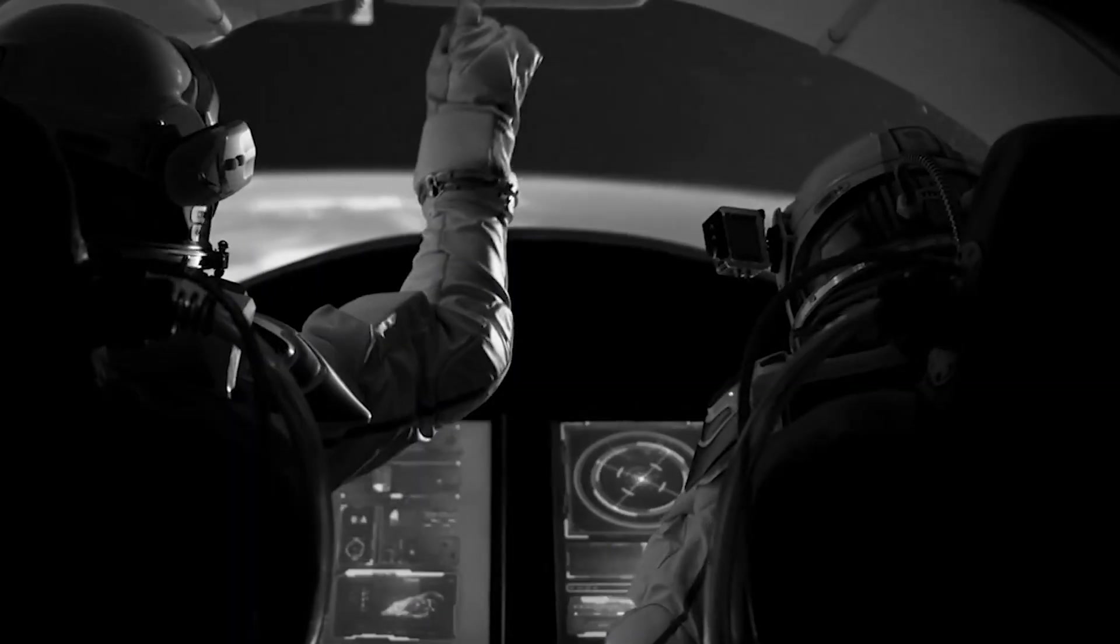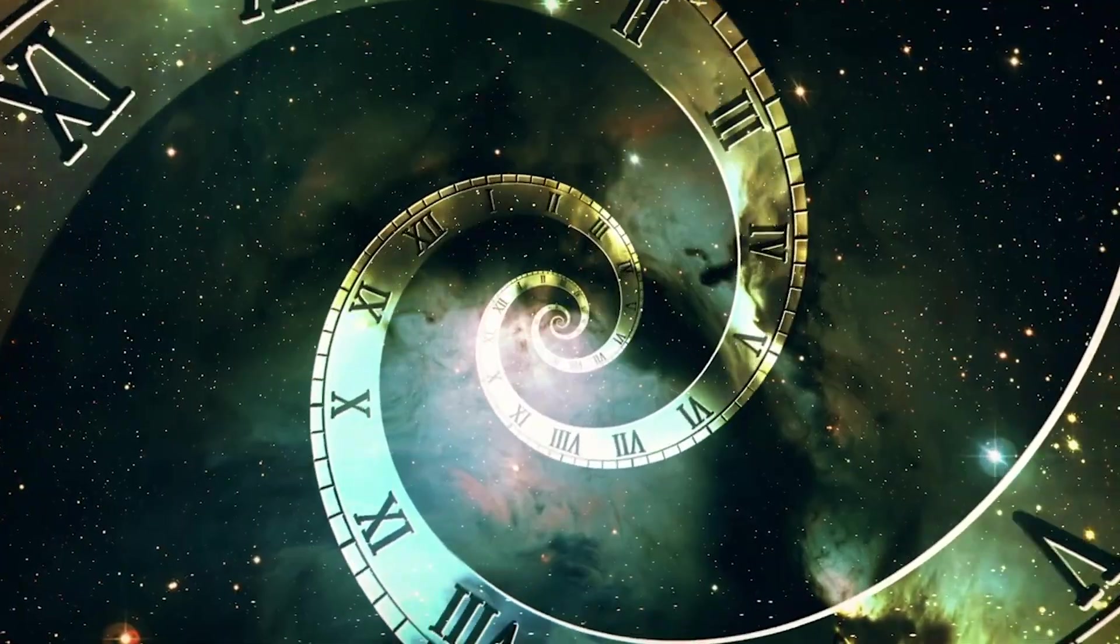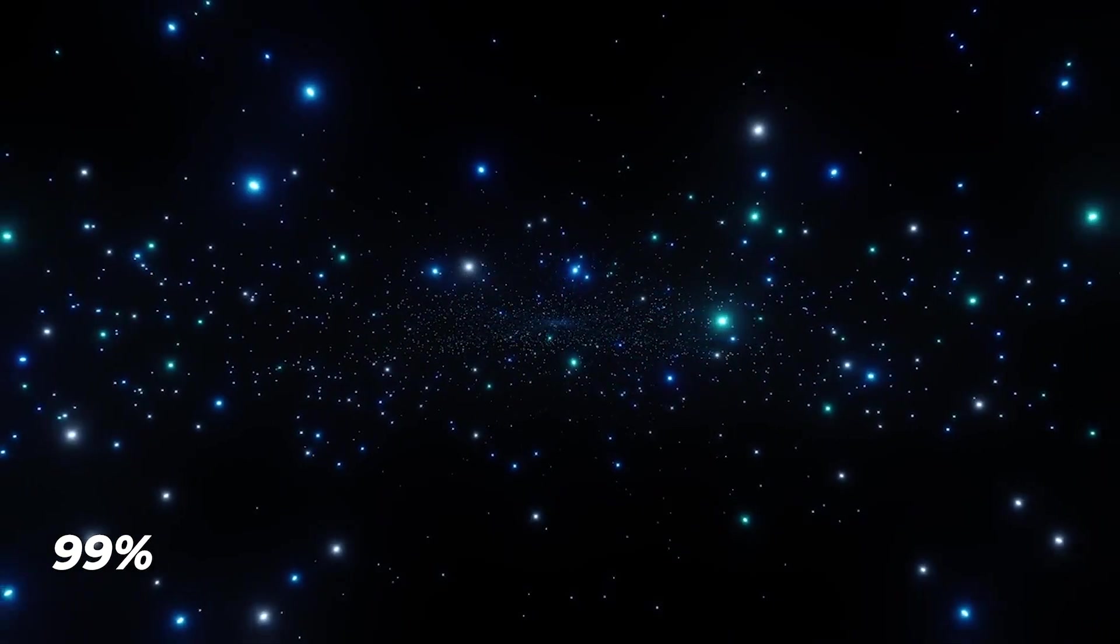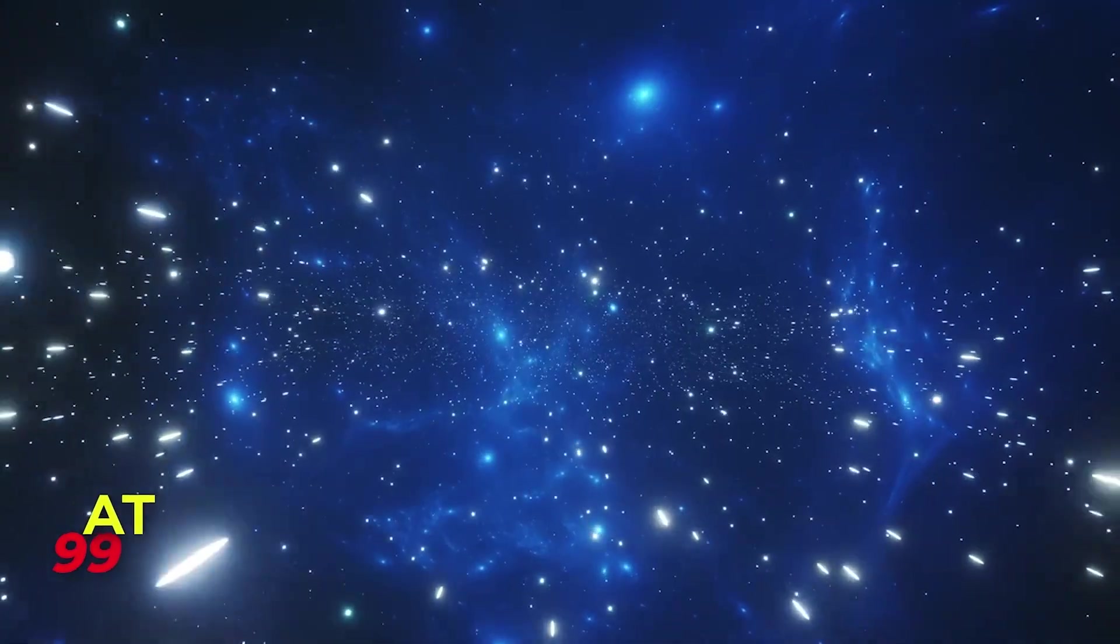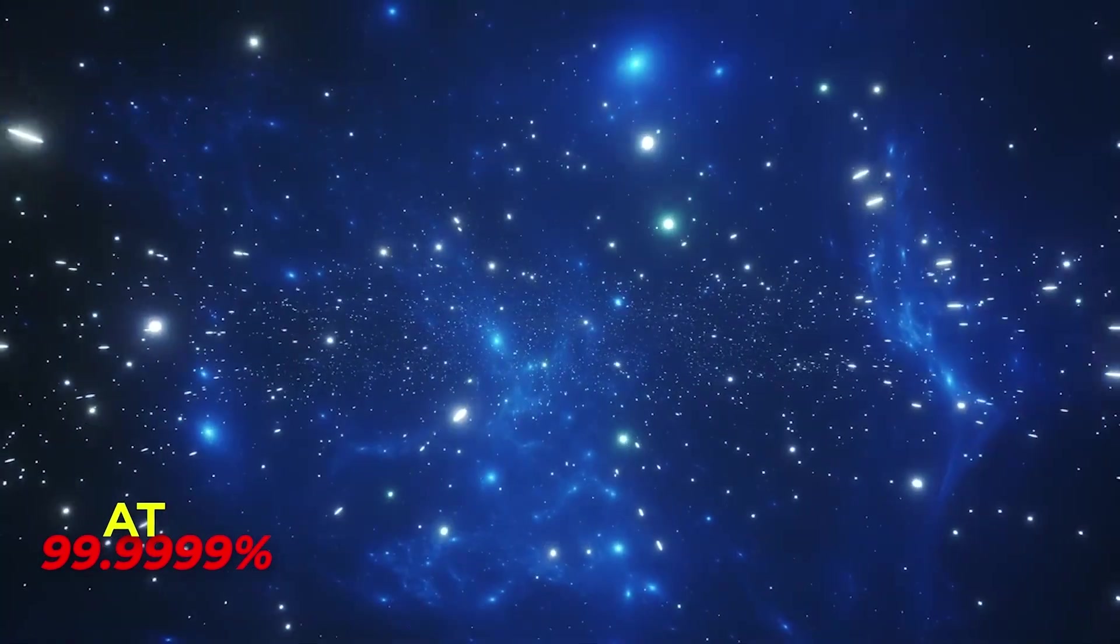But there's something even more mind-bending happening. Time dilation. Time for you slows down relative to everyone who stays behind. The faster you go, the slower your clock ticks. At 99% of the speed of light, time for you passes 7 times slower. At 99.9999%, it passes thousands of times slower.